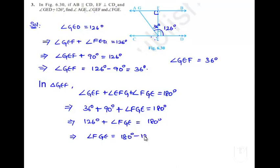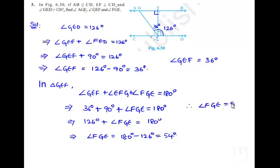That implies 36 degrees plus 90 degrees plus angle FGE equals 180 degrees, which gives 126 degrees plus angle FGE equals 180 degrees. Therefore, angle FGE equals 180 minus 126 degrees, that is, equal to 54 degrees. We have got the other unknown value: angle FGE is equal to 54 degrees.